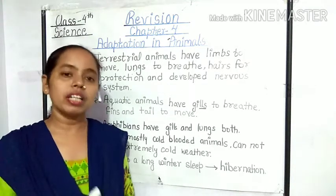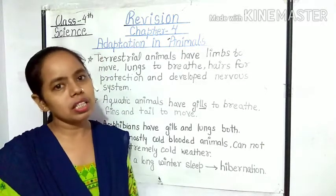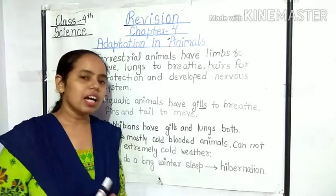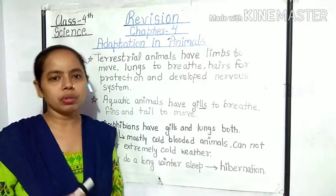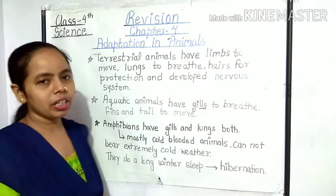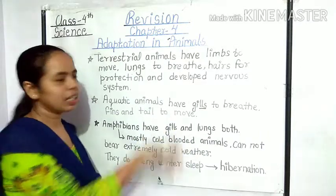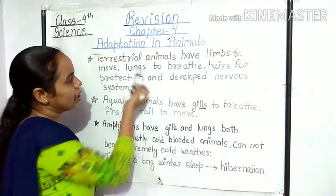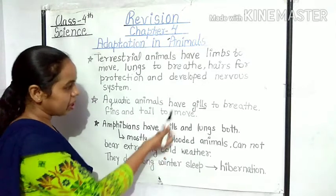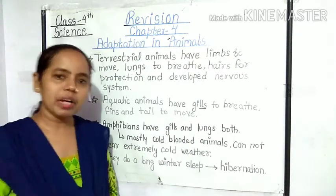Next है amphibians. Amphibians को हिंदी में उभयचरी जानवर बोलते हैं। ये ऐसे animals होते हैं जो land और water दोनों जगह पर easily रहते हैं और survive करते हैं। Amphibians have gills and lungs both. जब यह पानी में रहते हैं तो gills से सांस लेते हैं और जब यह land पर रहते हैं तो lungs से सांस लेते हैं।